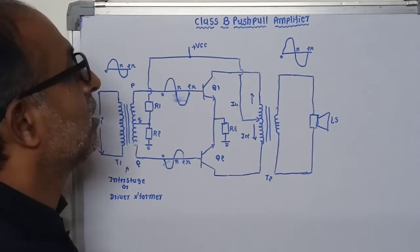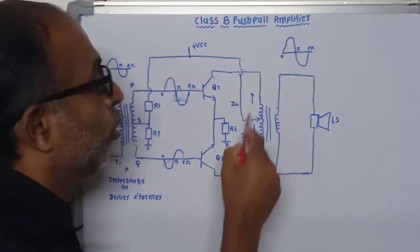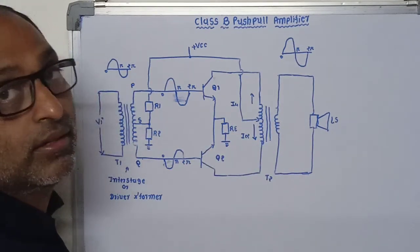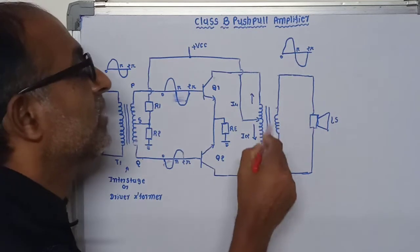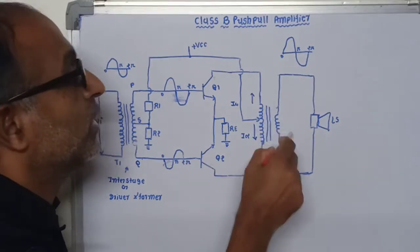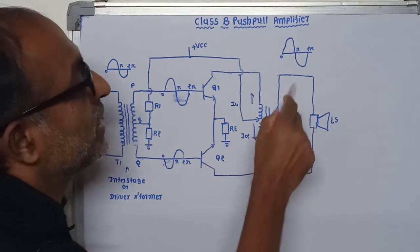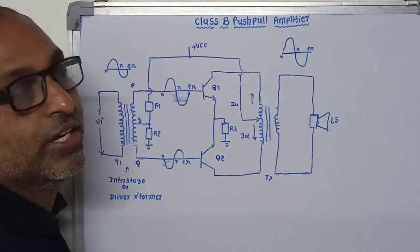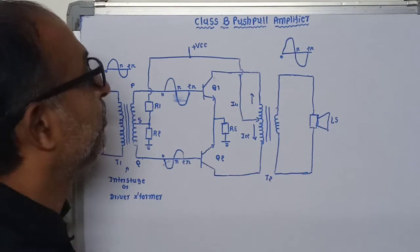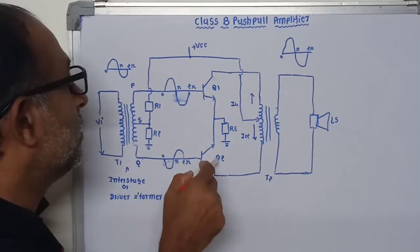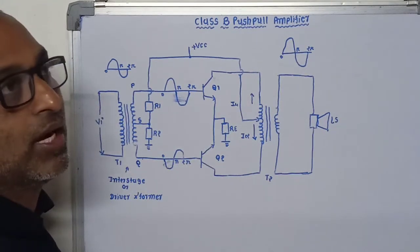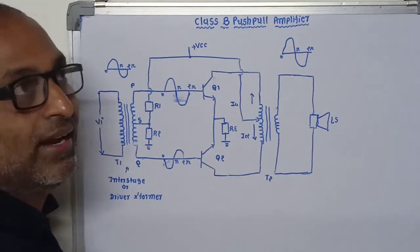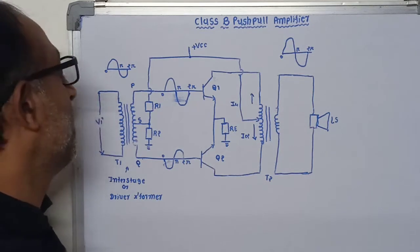As a result, flux is produced in the core, which is linked with the secondary winding of transformer T2, and EMF is induced in the secondary winding. Due to this voltage, current passes through the loudspeaker in one direction, meaning the electrical signal is converted into sound. At the same time, transistor Q2 is driven into the cutoff region, so no collector current flows through Q2.